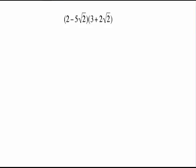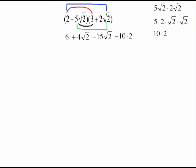Back to FOILing. First times first: 2 times 3 gives me 6. Across the outsides: 2 times 2 radical 2 is 4 radical 2. The inside is negative 15 radical 2. Now be careful here. This is 5 radical 2 times 2 radical 2 — you may want to write it out to the side. Reorganize it with whole numbers out front and radicals next to each other. 5 times 2 gives me that 10.